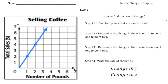Hey everybody, Dr. Nelson here. This is a video about how to find the rate of change of graphs. We're going to do a few pages of notes together and then you have a chance to try some problems on your own, and at the end you can see how you did. So just a reminder about what exactly is rate of change — rate of change describes how one quantity changes in relation to another. Here our first problem we're looking at selling coffee, where one quantity is total sales and the second is number of pounds.